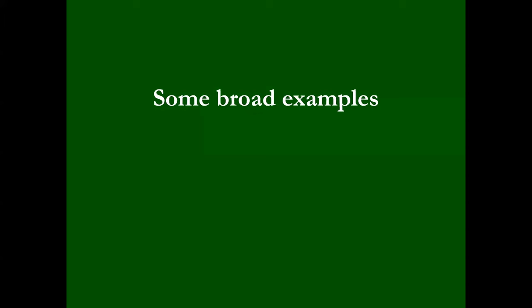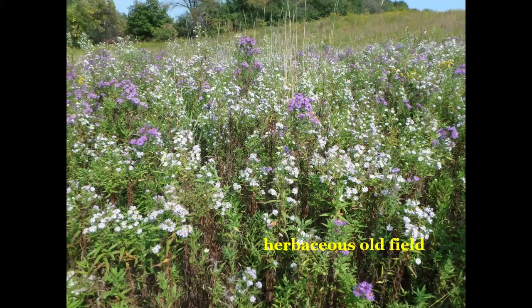To make this more manageable and less academic, I've grouped related types into broader categories. Here are some broad examples for central New York. Old Field — historically this was one of the rarest community types; in fact, it didn't exist. Old fields are a product of abandoned agriculture.